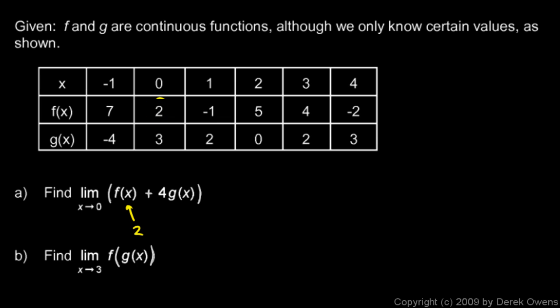As x approaches 0, that becomes 2. And then g of x, as x approaches 0, g approaches 3. So this is just equal to 2 plus, don't forget that 4 right there, 2 plus 4 times 3, which is 14. And that's our answer.